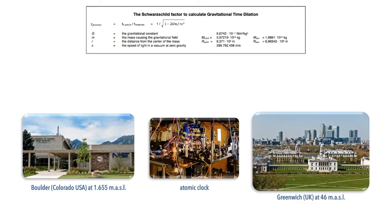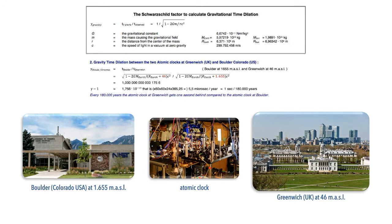There is an atomic clock at Boulder, Colorado, USA at an altitude of 1,655 meters above sea level, and another atomic clock at Greenwich at an altitude of 46 meters above sea level. So therefore there is a gravitational time dilation. If we put the altitude of the atomic clocks into the formula, we can see that there is a time difference of 5.5 microseconds — millionths of a second — a year, so that is one second each 180,000 years.